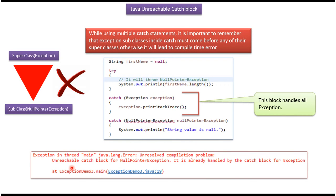The compiler will throw a compile-time error saying: 'Unreachable catch block for NullPointerException. It is already handled by the catch block for Exception.' So in this example the order of catching exceptions is wrong, and the compiler is throwing a compile-time error.